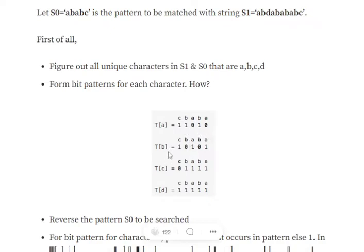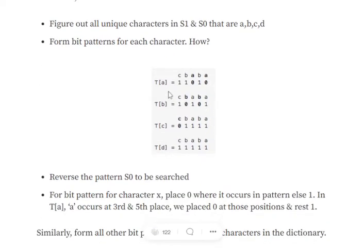Similarly for b, at the second and fourth positions we place 0 since b occurs there, and all other characters get a 1, giving 10101. The same logic applies for c. For d — character d is present in the input string s1 but not in s0, so since there is no d in s0, we put all values as 1, giving 11111. So we now have the bit patterns for all four unique characters.